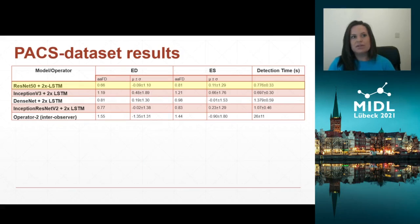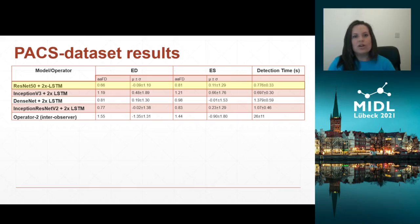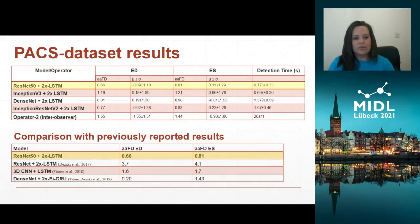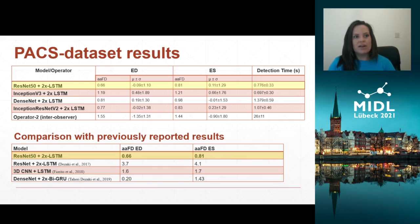The PACS dataset results indicate the error between operator 1 annotations, considered as the ground truth, compared with model predictions and those made by human operator 2. Of all the architectures tested, ResNet-50 with a two-layer LSTM demonstrates the smallest error. The model and operator 1 results are within the range of disagreement observed between the two trained human experts, and the model outperforms almost all existing approaches, though comparison with prior results is difficult as they used their own private datasets.